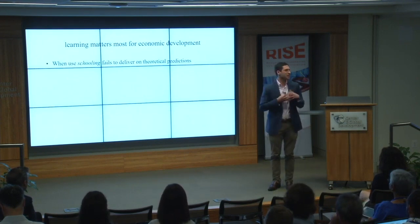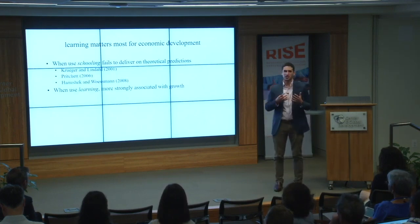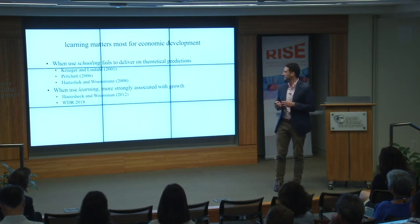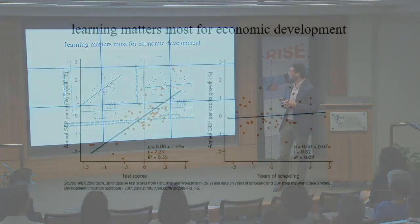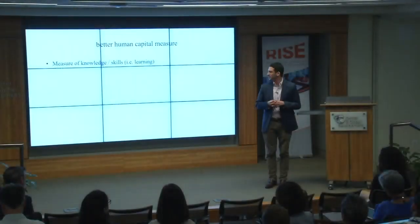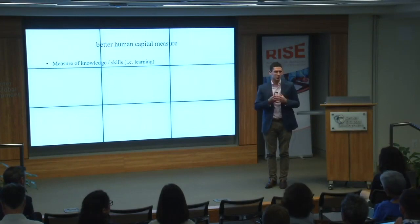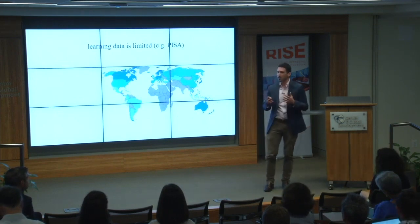Schooling can sometimes fail to deliver on the predictions from economic growth theories. But when you use learning, you get much stronger associations. A very famous paper by Hanushek and Woessmann, chronicled in the World Development Report 2018, shows that years of schooling conditional on test scores gives a flat relationship to annual GDP per capita growth, but with learning you see a positive association. So can we come up with a better human capital measure on a global scale that actually measures knowledge and skills, is available across countries, and over time?